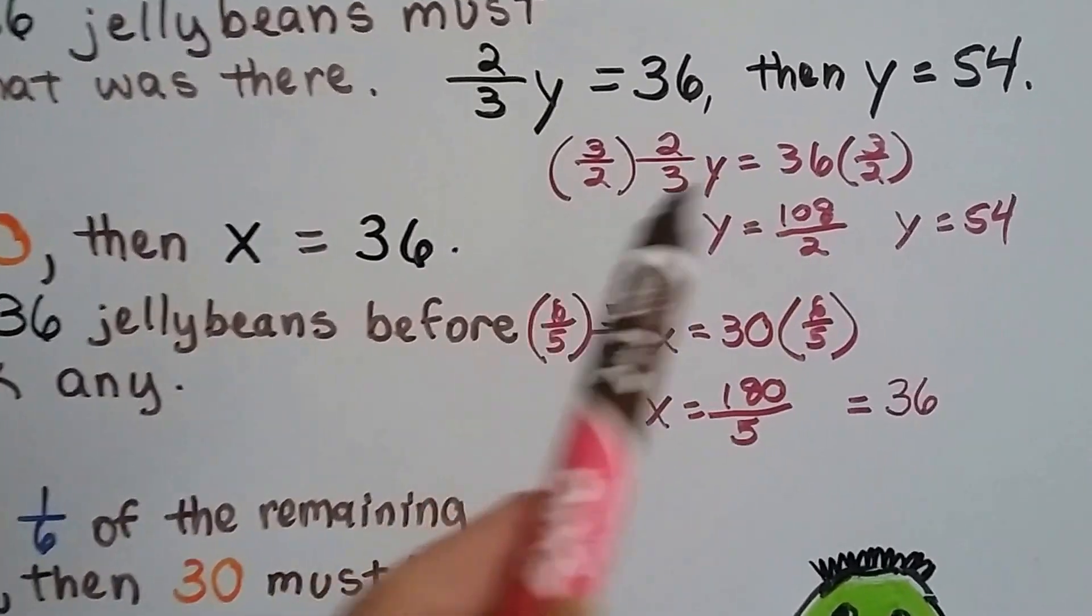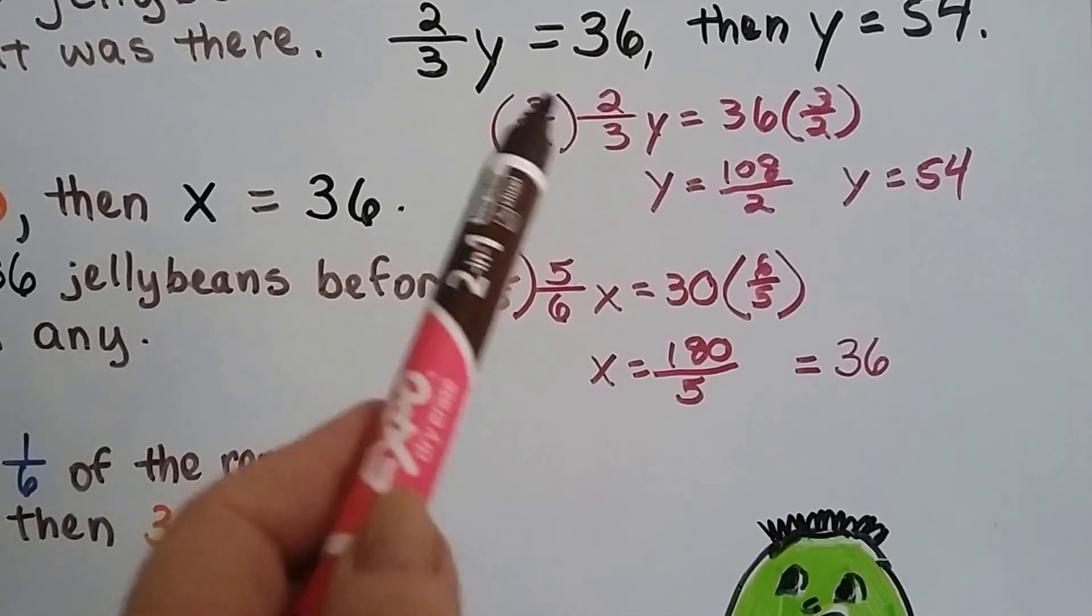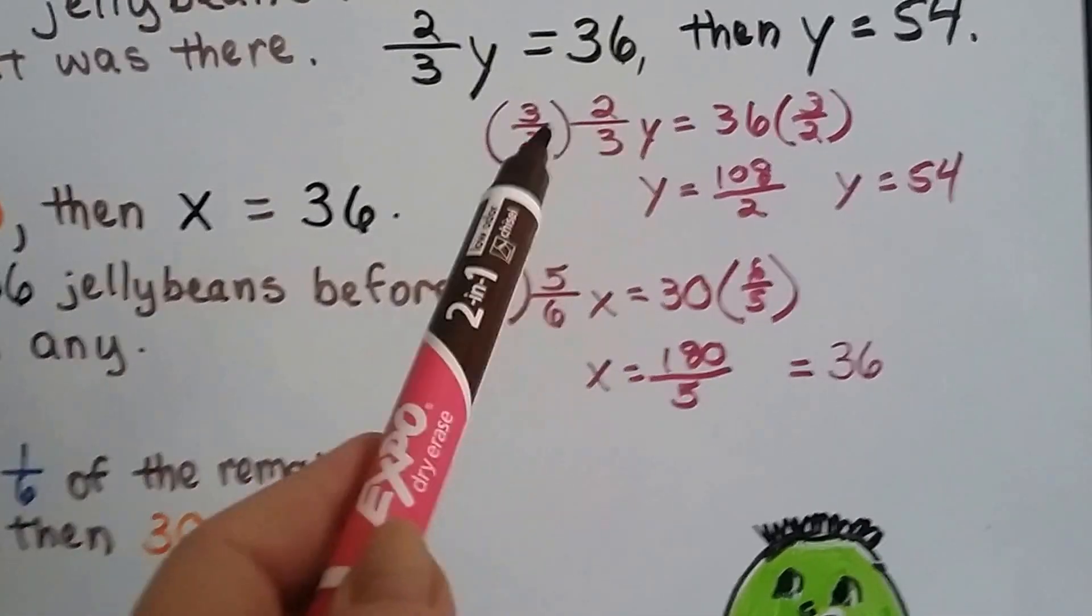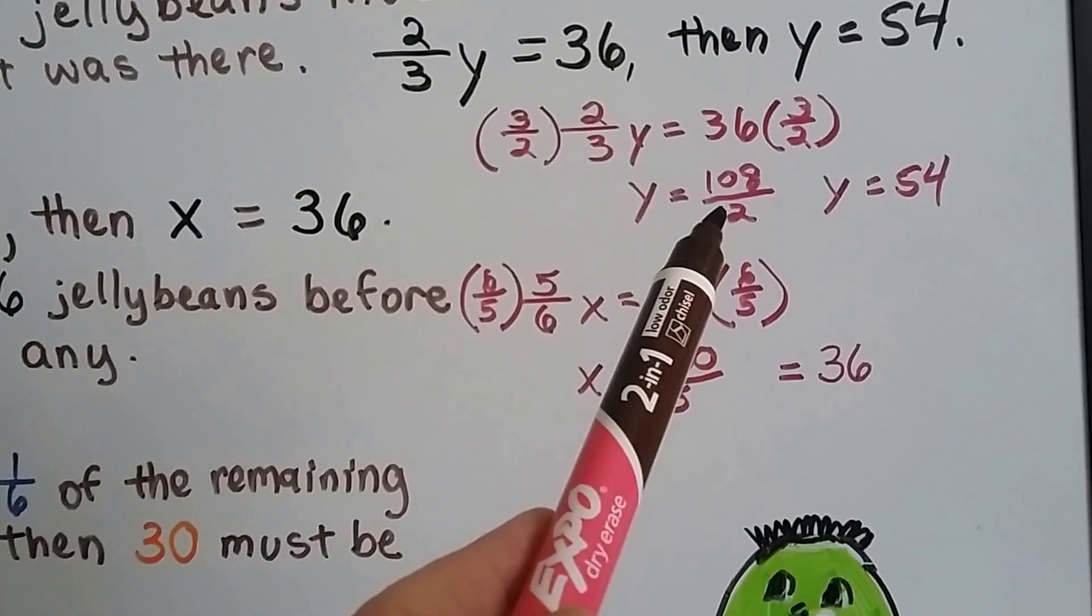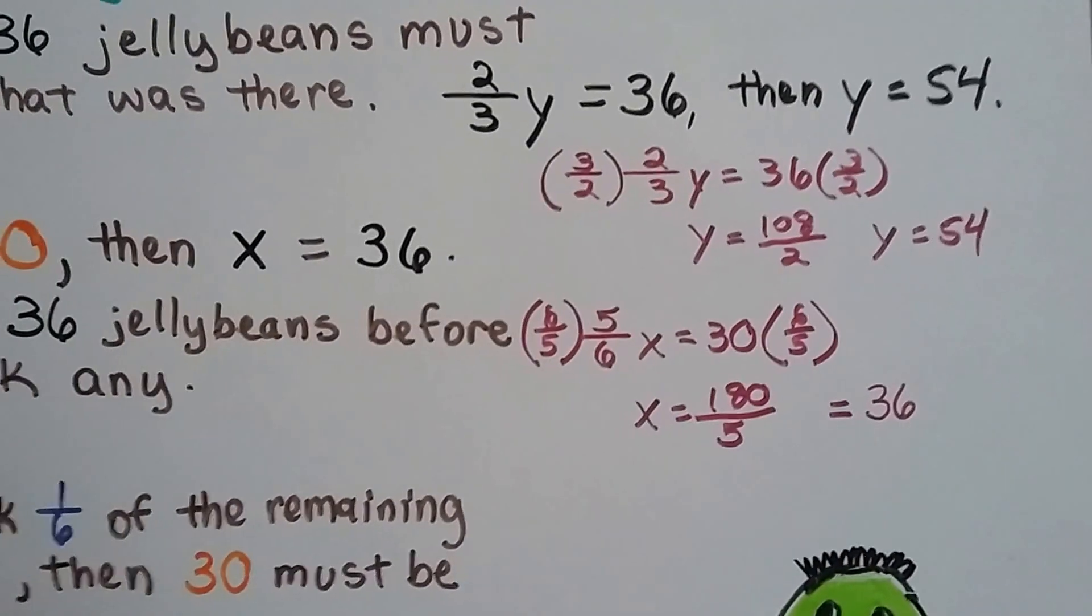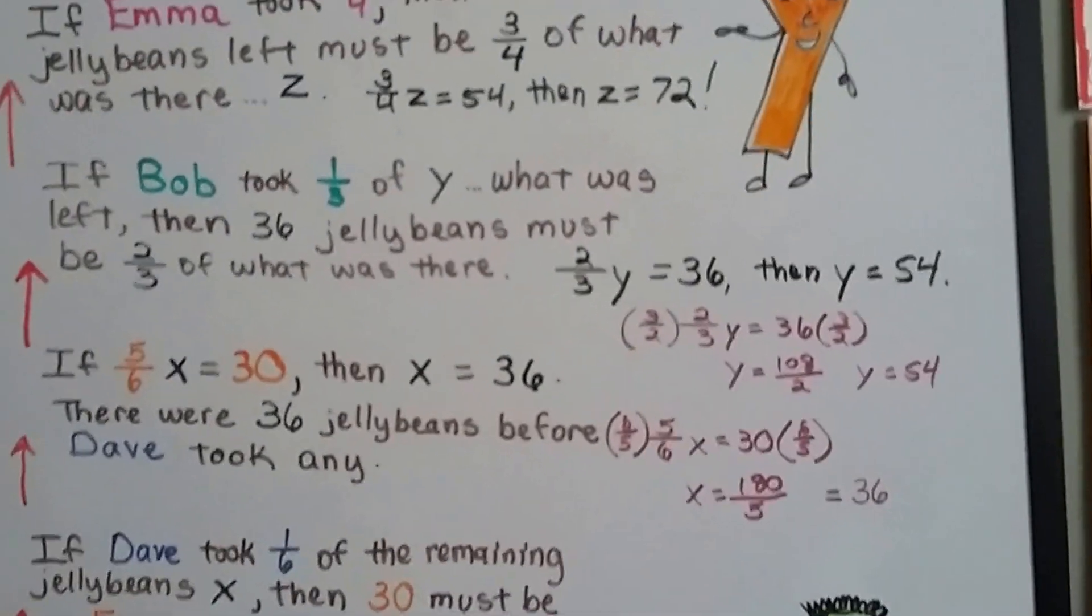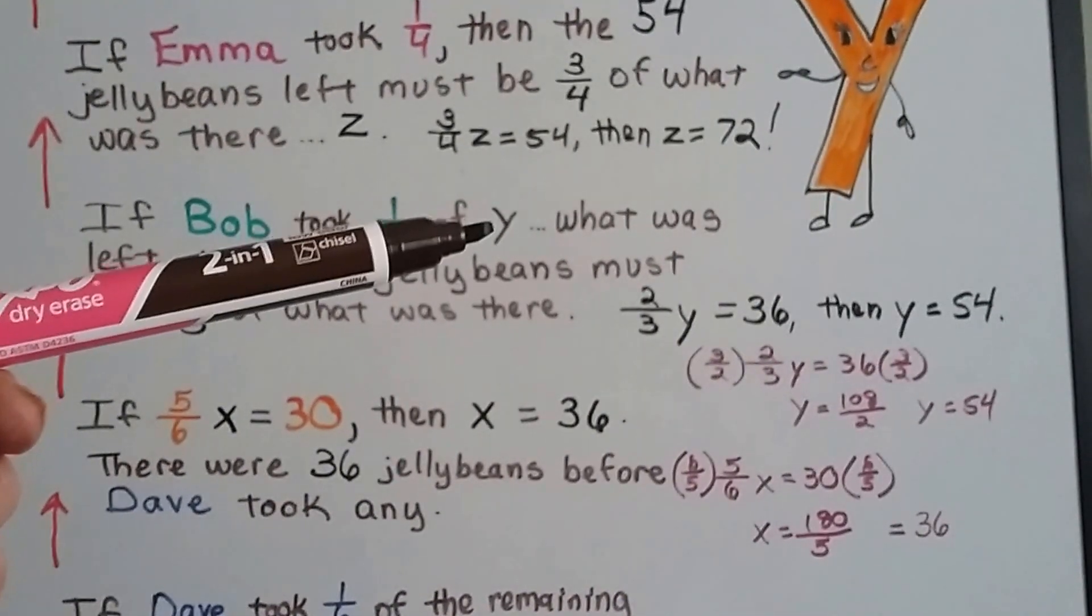So we multiply both sides of two-thirds Y equals thirty-six by the reciprocal, three over two. We get six over six, which is one Y. And we get one hundred and eight over two. And when we simplify it, Y equals fifty-four. So now we know that before Bob took his one-third, there were fifty-four there.